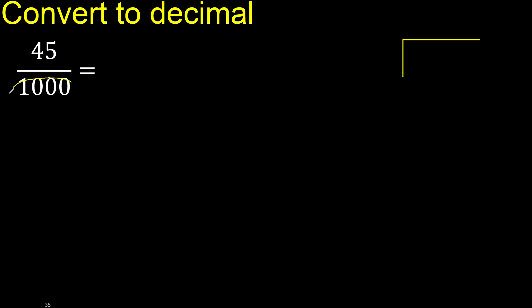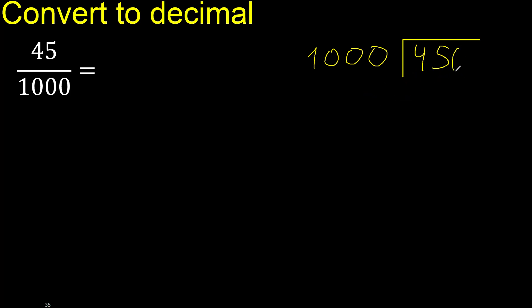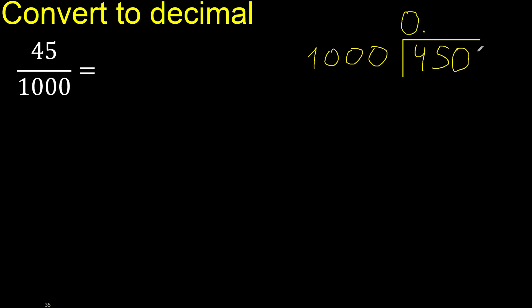45 divided by 1000. 45 is less, therefore complete with 0. Here: 0 point — always complete with 0 — complete with 0 point only once.